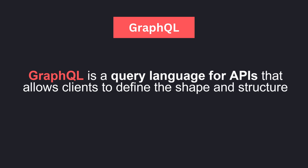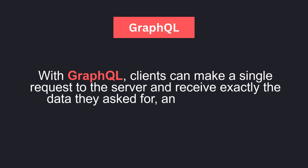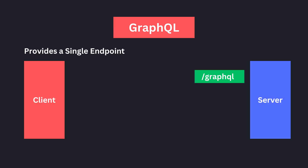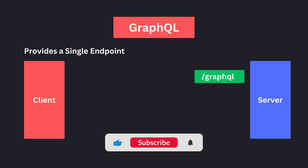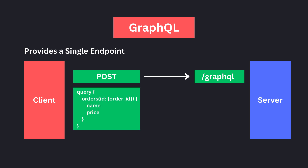GraphQL is a query language for APIs that allows clients to define the shape and structure of the data they need. With GraphQL, clients can make a single request to the server and receive exactly the data they ask for and nothing more. Unlike RESTful APIs, GraphQL provides a single endpoint — often /graphql — which always takes a POST request. Clients send a single request to this endpoint and the server responds with the requested data based on the query or mutation sent via the request body. This approach makes it easy to manage and version the API, as all changes can be made in one place.